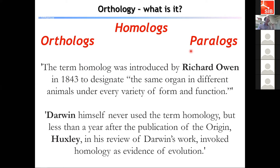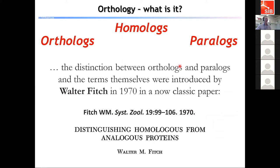Very quickly after the publication of the Origin of Species, Huxley, when reviewing Darwin's work, invoked homology as evidence of evolution. For us it might be obvious that having the same organ in different animals implies common ancestry and descent from a last common ancestor — but this wasn't so obvious in the late 1800s. That gives a little bit of history about where these terms have come from.